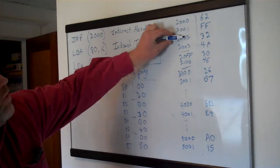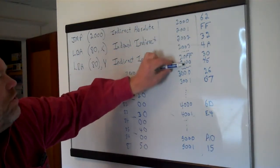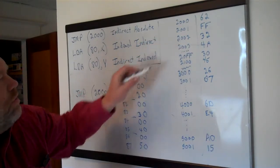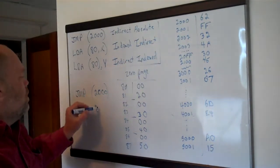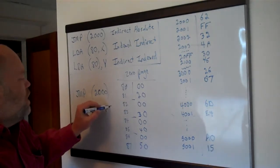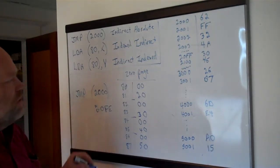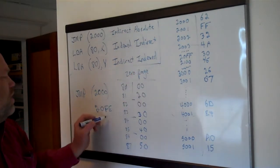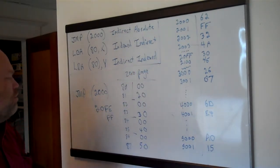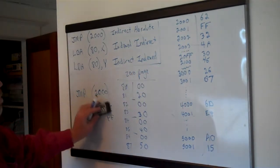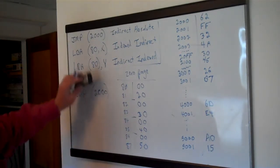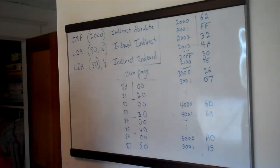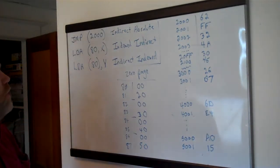Just make sure you always start your jump table entries on even addresses, and that way you're never going to have this wraparound situation — because even if you get to the end of the page, you'd be going to 20FE, getting the low byte from there and the high byte from 20FF, and you don't have that wraparound problem. It's not likely to ever happen, but if it did happen it could be really confusing to figure out.